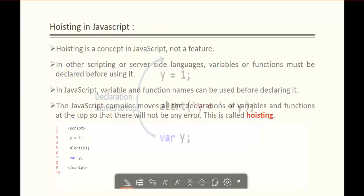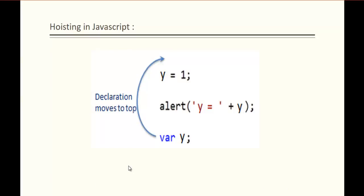To understand this clearly, I have a diagrammatical representation of the code. Variable y has the value 1 assigned to it, and after that there's an alert function passing variable y. But I have not declared this variable before the initialization — it's declared after the initialization, at the bottom. When I execute this, the JavaScript compiler moves all the declarations of variables and functions to the top. There will be no errors. This concept is called Hoisting in JavaScript.